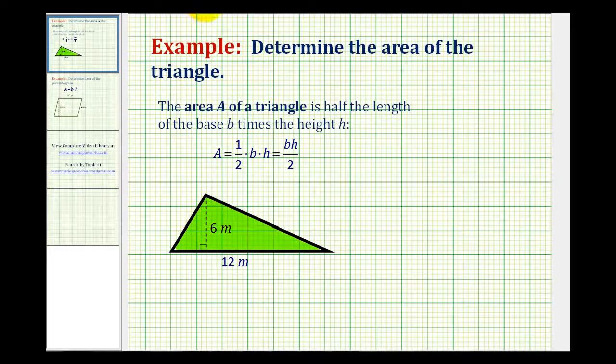The formula to determine the area of a triangle is area equals one-half times the length of the base times the height, which if we want we can also express as base times height divided by two. Multiplying by one-half is equivalent to dividing by two. But normally you'll see the area formula as one-half times base times height.